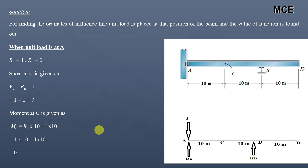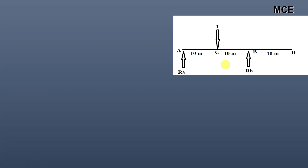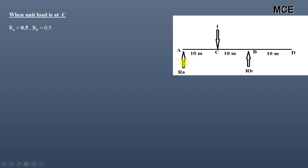Next, place the unit load at C. This is a case of symmetrical loading, so RA and RB are both equal to 0.5. Taking the moment about support B: the moment due to the unit load is 1×10 (clockwise) and moment due to RA is RA×20 (clockwise), giving RA = 1×10 / 20 = 0.5. Therefore RB = 1 − RA = 0.5.